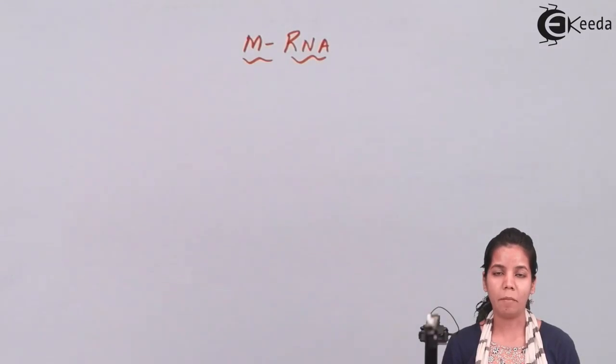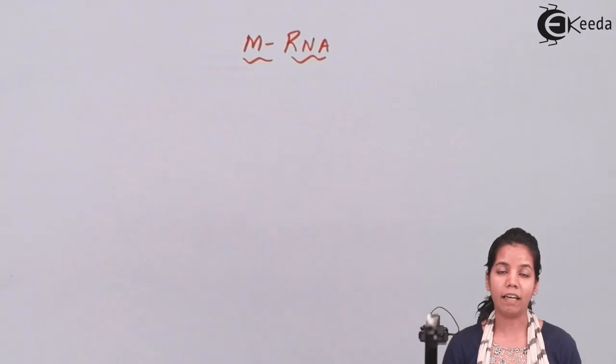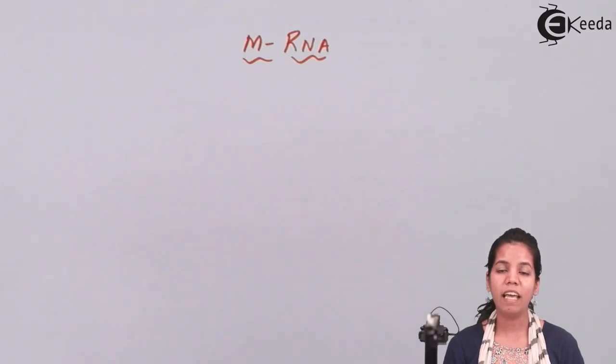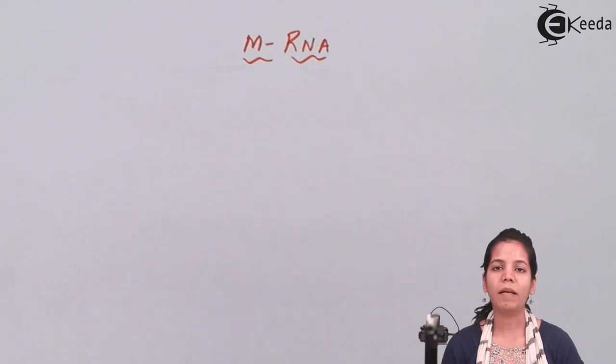Messenger RNA is formed after DNA replication is done. As we all know, DNA is helical in nature. One helical strand of the DNA is copied—one side of the DNA is copied—and messenger RNA gets from there all its messages or information.